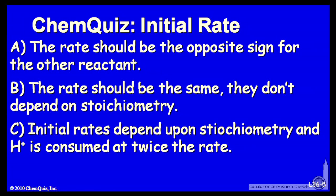Let's look at a possible explanation for each answer. Remember, A, the rate should be the opposite sign for the other reactant. Or B, the rate should be the same. They don't depend on stoichiometry. Or C, initial rates depend upon stoichiometry, and H plus is consumed at twice the rate. Think about those three and make a selection.